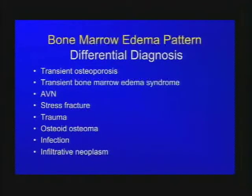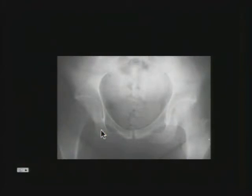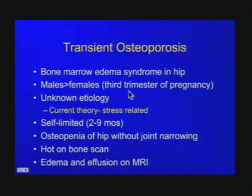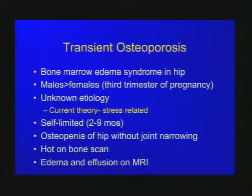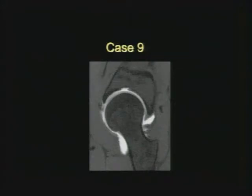Looking at the radiograph of this patient, we see osteopenia and a normal joint space — number one would be transient osteoporosis, though osteoid osteoma in a young patient could look just like this, usually giving osteopenia if in the joint without sclerosis. Infection is much less likely without joint narrowing. Transient osteoporosis is more common in males, but in females it presents in the third trimester of pregnancy and is self-limited — hot on bone scan, with edema on MR and effusion.